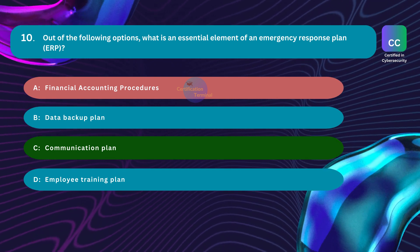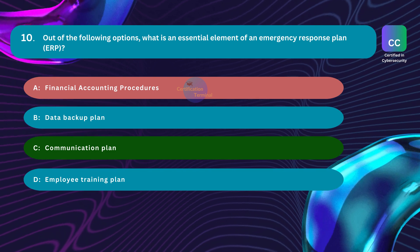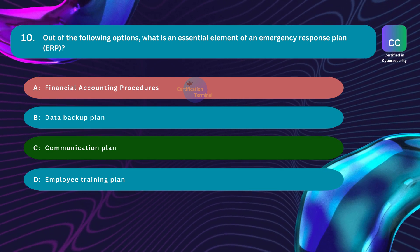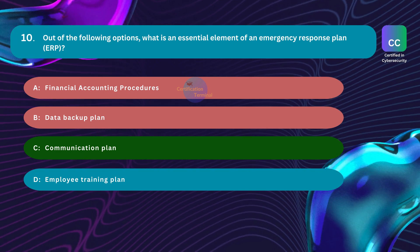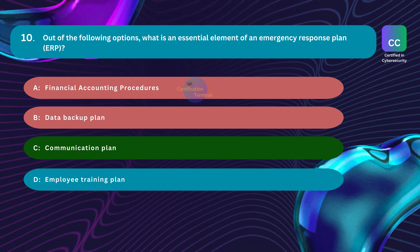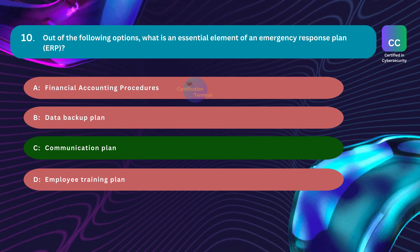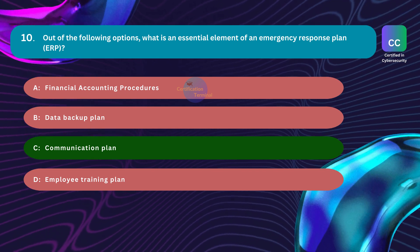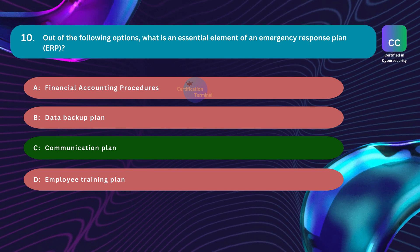Option A, financial accounting procedures, is incorrect — while important for business continuity, financial procedures are not a core element of an emergency response plan and may be addressed in a broader business continuity plan. Option B, data backup plan, is incorrect — a data backup plan is crucial for data recovery, but focuses more on IT and data management rather than immediate emergency response. Option D, employee training plan, is incorrect — while important for overall emergency preparedness, it is a broader concept that extends beyond the immediate response plan.